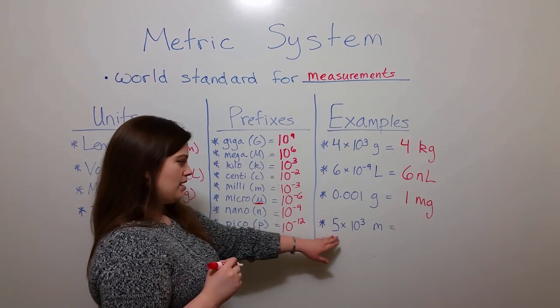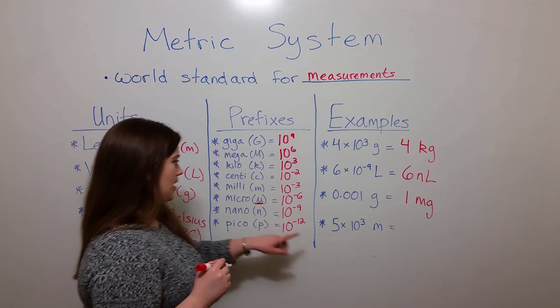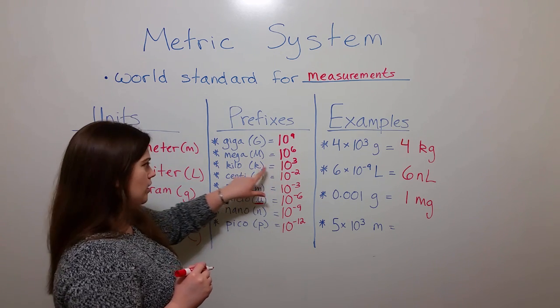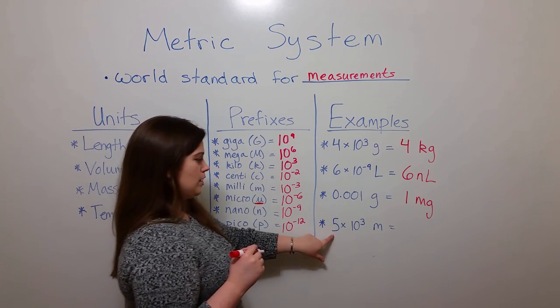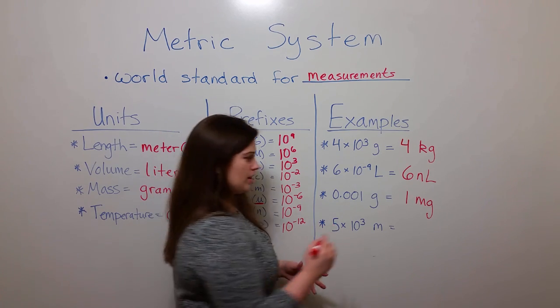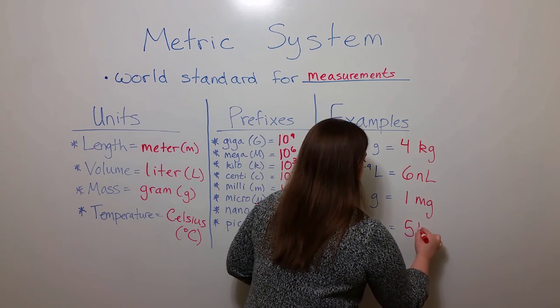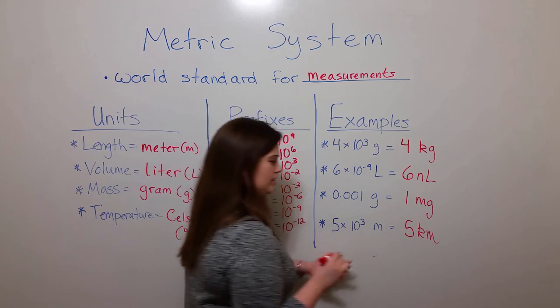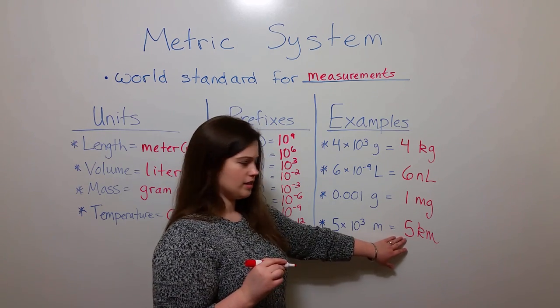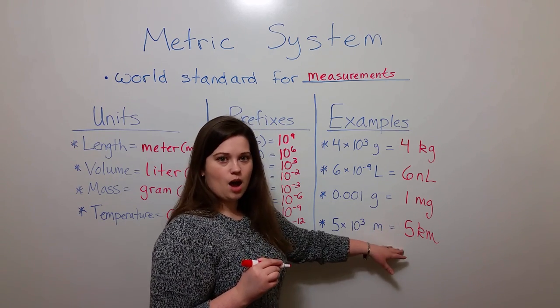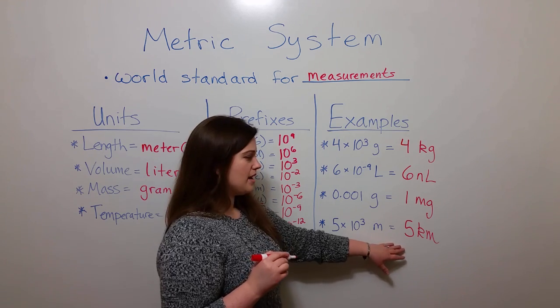Here's another one. Five times ten to the third. Again, the prefix for ten to the third is kilo. So this would be five kilometers. And of course, all of you runners out there know that five kilometers is a 5K, a common type of distance run.